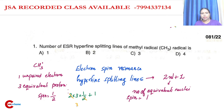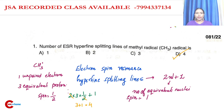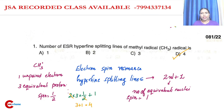So this is equal to four. The answer is four. ESR hyperfine splitting lines of methyl radicals — answer is four. This is one compound you can calculate.